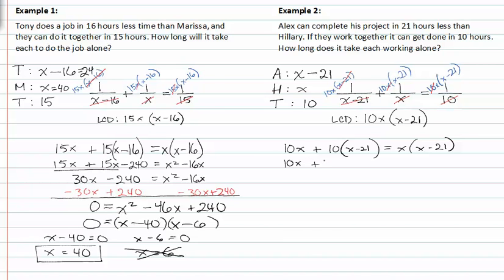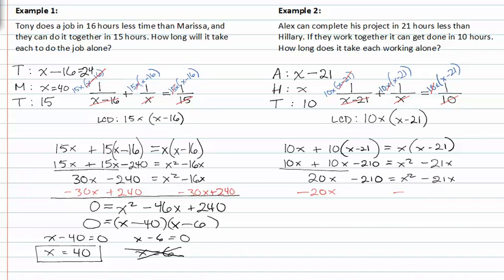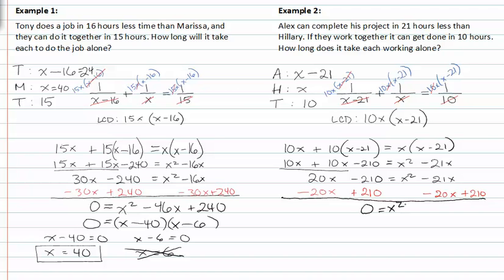We distribute the factors through the parentheses and then combine like terms. Setting everything equal to zero by subtracting twenty x and adding two hundred ten to both sides gives me x squared minus forty-one x plus two hundred ten.